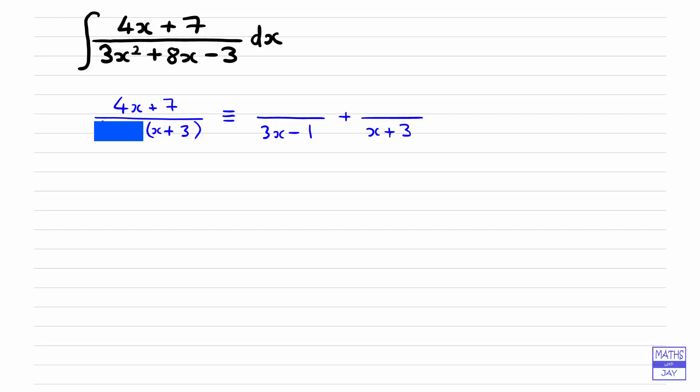So that means we're going to have on the first fraction, let's just write the line in for the fraction, so we're going to have 4x plus 7 on top, so that's 4 times a third plus 7, and then for the denominator, we've got x plus 3, so that's a third plus 3. So that gives us the number that goes on top of the 3x minus 1.